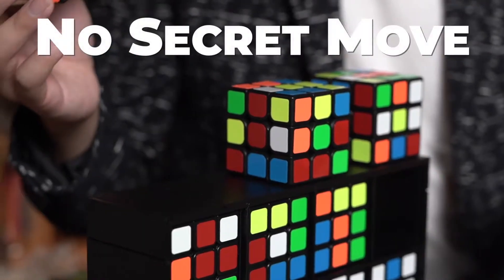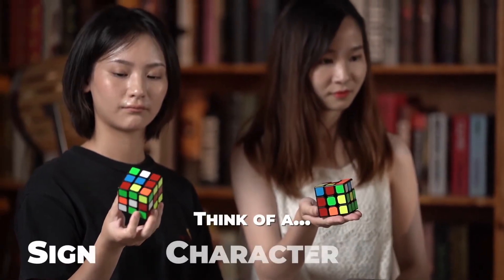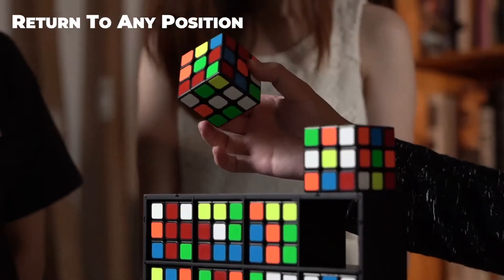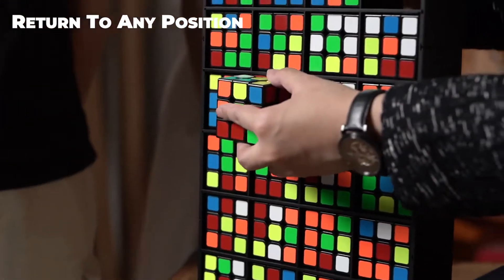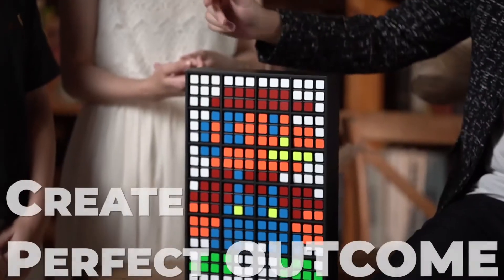With no secret move, the spectator thinks of a sign, character or an image. Each cube will then return to any position to create a completely random pattern, and it will become a perfect outcome.